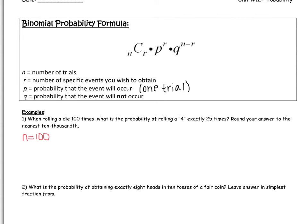N is 100. So we're rolling the die 100 times. And we want to obtain a 4 25 times. So my R is 25. Out of the 100, we want to get a 4 25 times. So P is the probability that the event will occur. What is the probability of rolling a 4? What's the probability of rolling the 4 just theoretically? You're going to tell me 1 out of 6. So that's my probability P, that the event occurs is 1 out of 6. What would be my Q then? You should be telling me 5 out of 6.